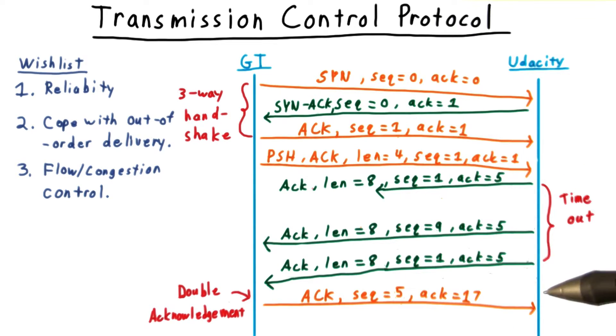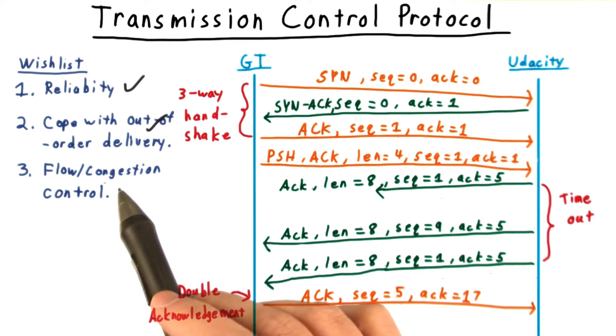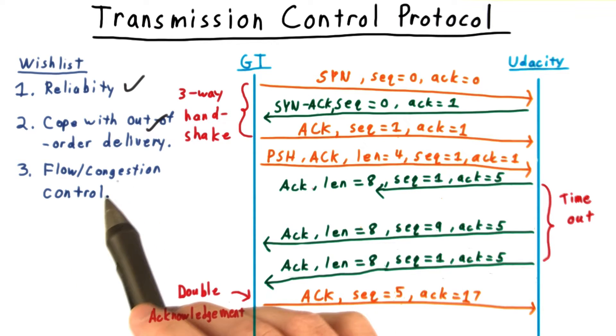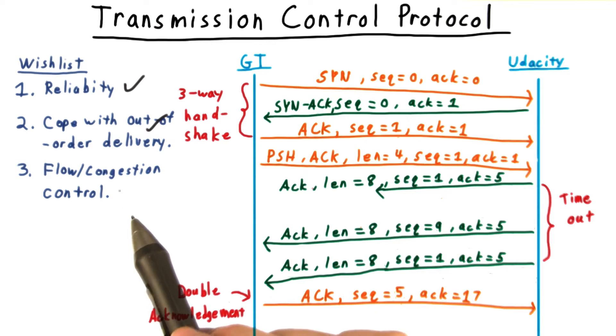Together, this system of acknowledgements and sequence numbers helps achieve the first two goals. I'll have to refer you to a networking class for a more complete discussion of the third goal, but I do want to briefly discuss the idea of window size.